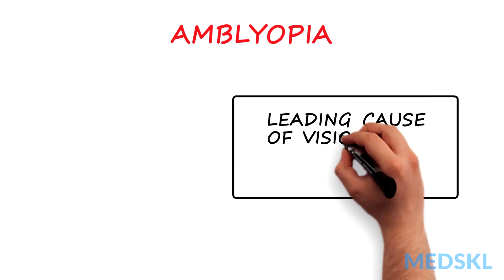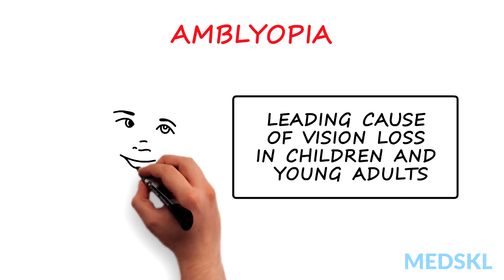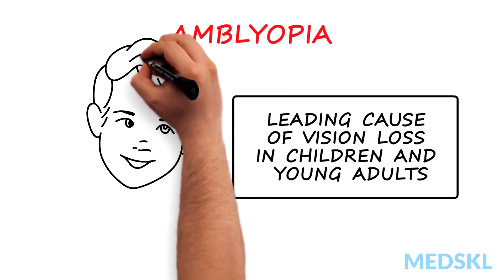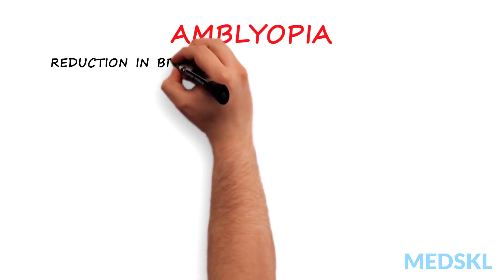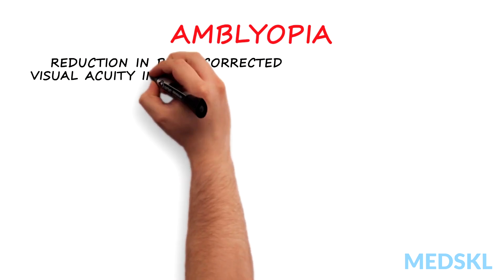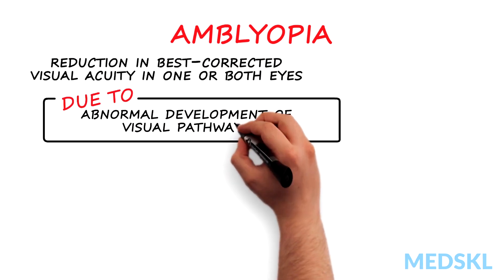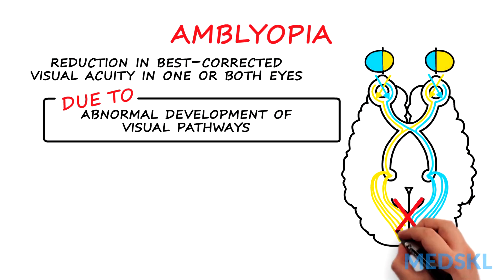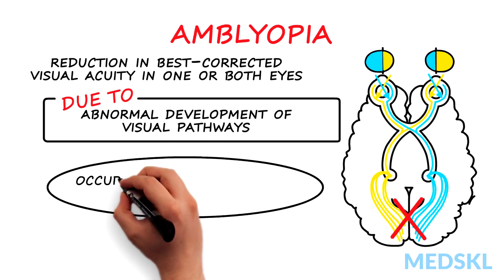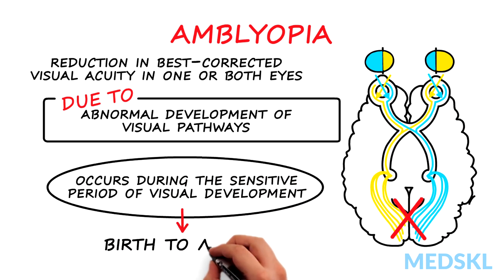Amblyopia is a leading cause of vision loss in children and young adults. It is preventable and potentially reversible if detected early. Amblyopia is diagnosed when there is reduction in best-corrected visual acuity in one, or less commonly both eyes, due to abnormal development of visual pathways during infancy or childhood. It almost always occurs during the sensitive period of visual development from birth until 7 years of age.